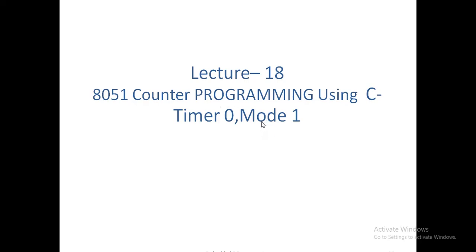In the previous lecture, we discussed timer operation with mode 0, mode 1, mode 2, and mode 3. You can use either timer 0 or timer 1 for these modes. Mode 0 is a 13-bit timer mode, mode 1 is 16-bit timer mode, mode 2 is 8-bit auto-reload, and mode 3 is split timer mode. In this program, I am going to use timer 0 in mode 1 operation, which is 16-bit timer mode.